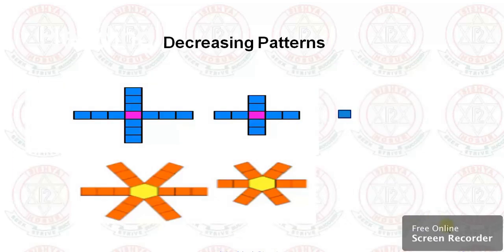Let's see some decreasing patterns. You can see a pink rectangle surrounded by others — here three, here three, here three, here three. So it is decreased in the next step: here two, here two, here two, here two.